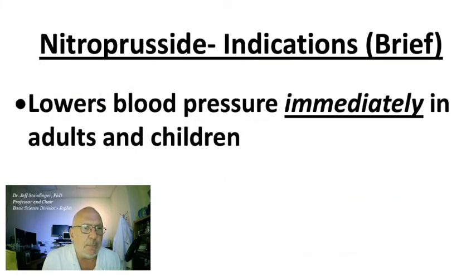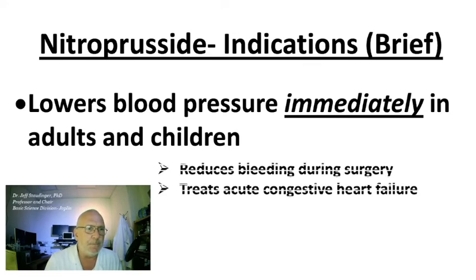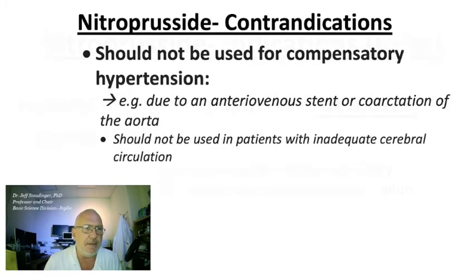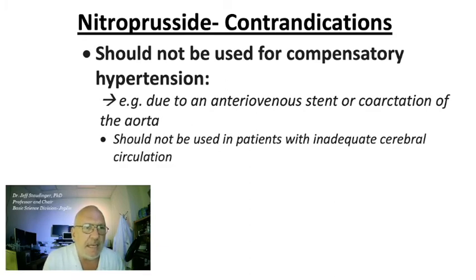Nitroprusside lowers blood pressure immediately in both adults and children. It reduces bleeding during surgery and treats acute congestive heart failure. It is contraindicated for patients with an arteriovenous stent.